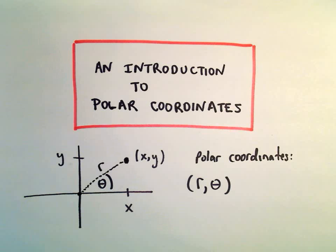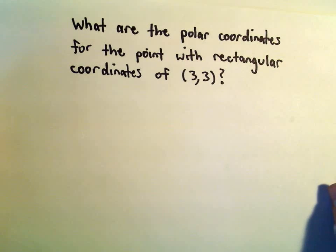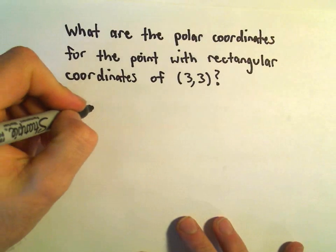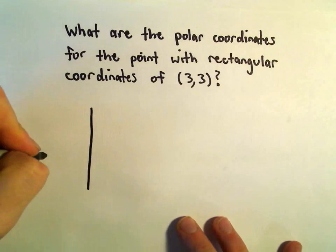Okay, so one more example here about a little introduction to polar coordinates. So suppose we want to figure out what are the polar coordinates for the point with rectangular coordinates of 3, 3.